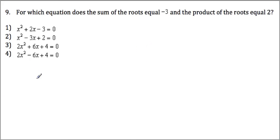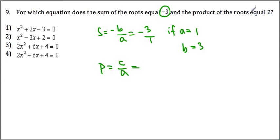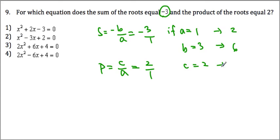Number 9: sum is negative 3. The sum of roots equals negative b over a. If a equals 1, then b must equal 3. Product equals c over a, which equals 2 — so c equals 2. The ratio of coefficients has to be 1, 3, 2. Choice 1 has 1, negative 3, and 2, so that wouldn't work. Looking at choice 3, a is not equal to 1, but if a equals 2, then b doubles to 6 and c doubles to 4. So choice 3 becomes our answer.